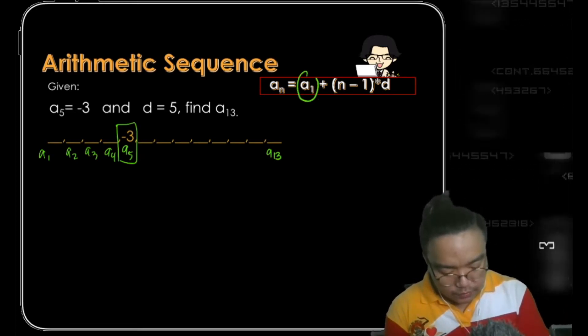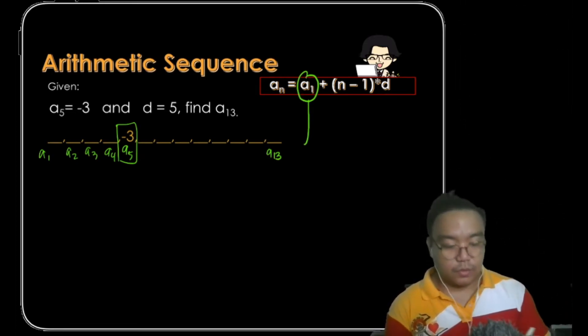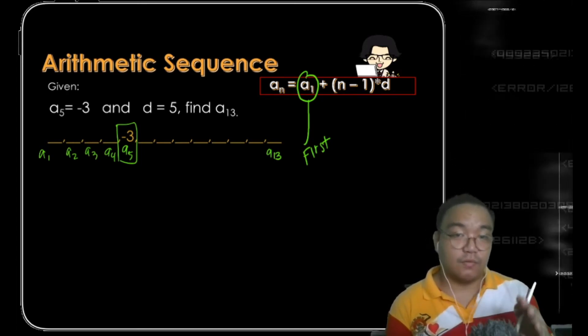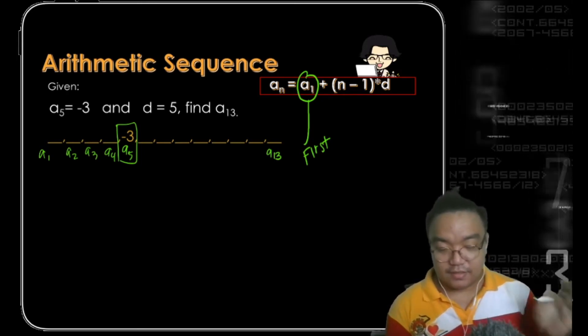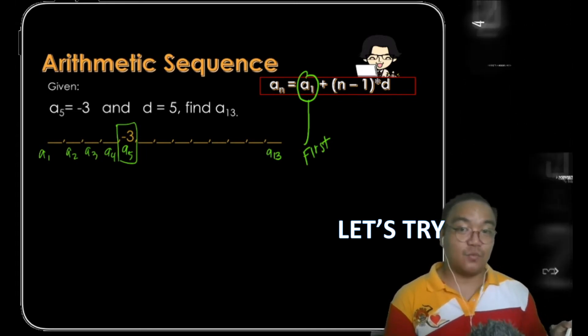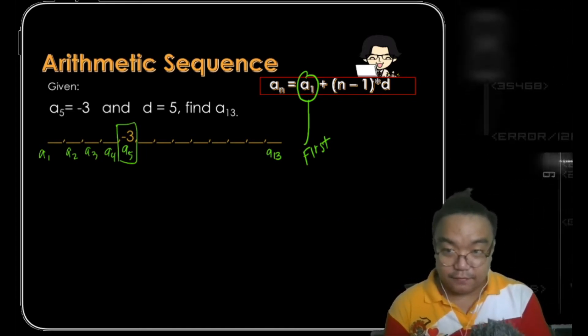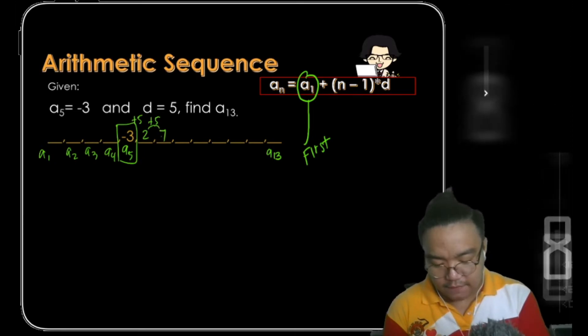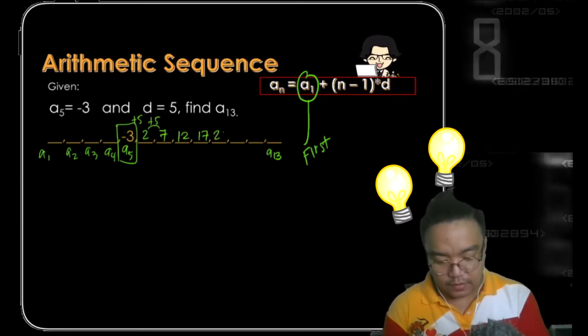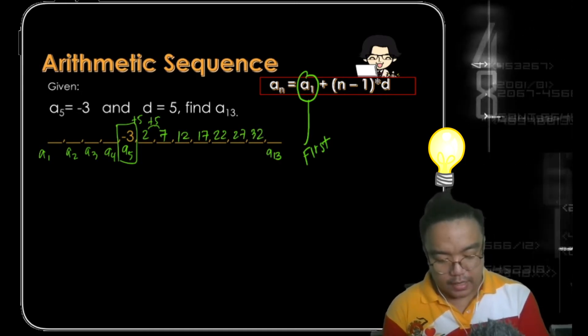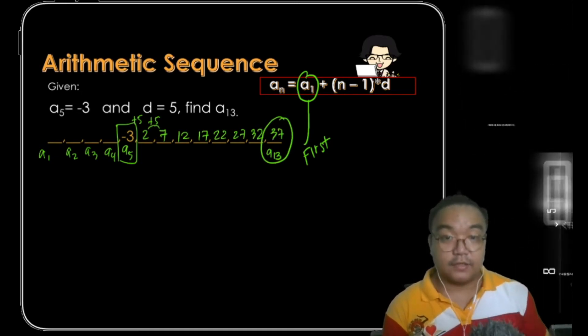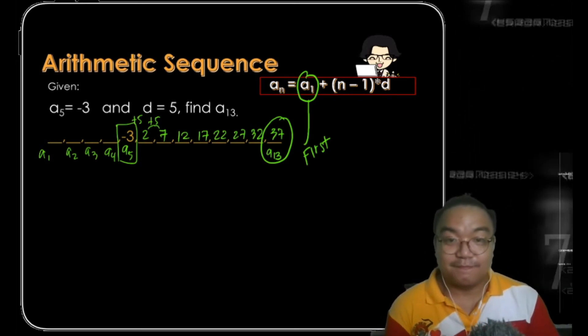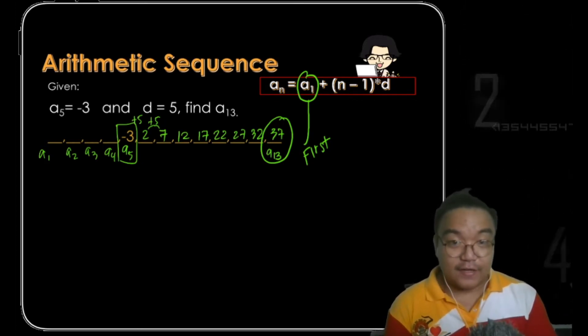The formula says that we need the first term. What if we don't know the first term? Can we find the first term? Yes. Can we find the last term? Yes, also. So let's list down first what most people will do. Negative 3, they will add 5 to get 2, they will add 5 to get 7, 12, 17, 22, 27, 32, and 37 is the 13th term. Here's what I tend to teach to my students.